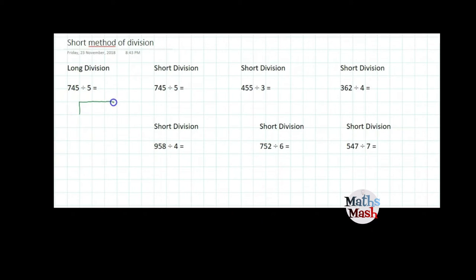So I start by drawing a house and inside the house is going to be 745 which is my dividend. My divisor 5 goes on the outside.